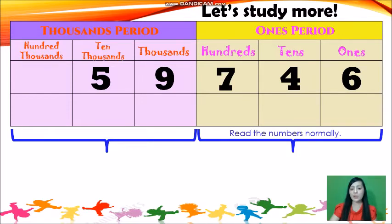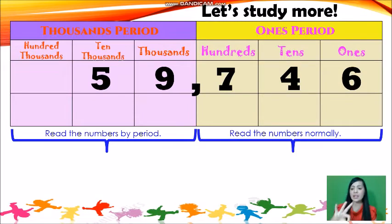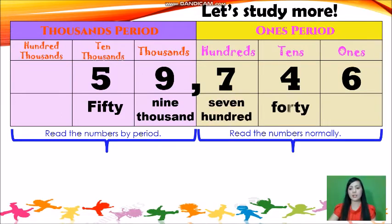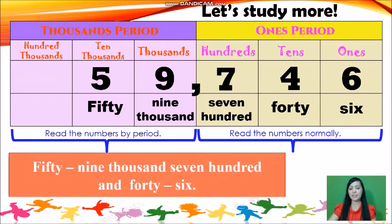In the 1s period, we read the numbers normally. Every three-digit number should have a comma, because it is represented by a period. So we can read that as 59,746.